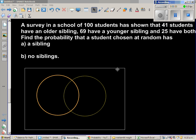Let us look at this question where we are going to use a Venn diagram. A survey in a school of 100 students has shown that 41 students have an older sibling, 69 have a younger sibling, and 25 have both. Find the probability that a student chosen at random has a sibling and no siblings.